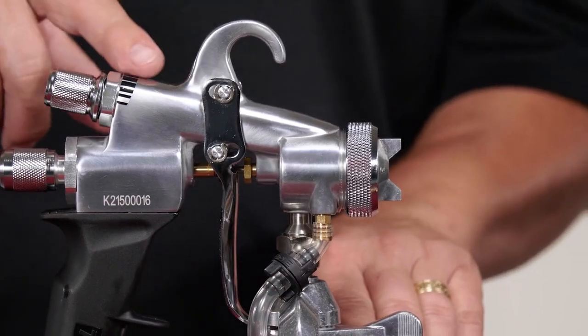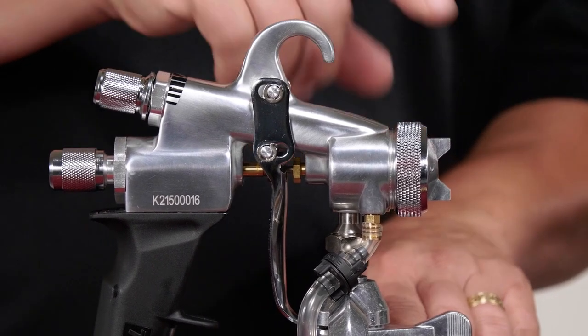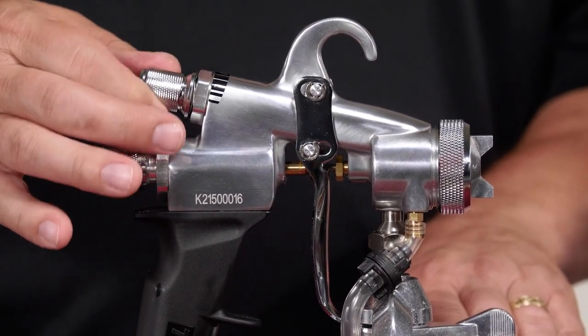The top airflow knob controls the amount of atomizing air coming from the air cap. Adjusting it right or left from center will reduce the amount of air.